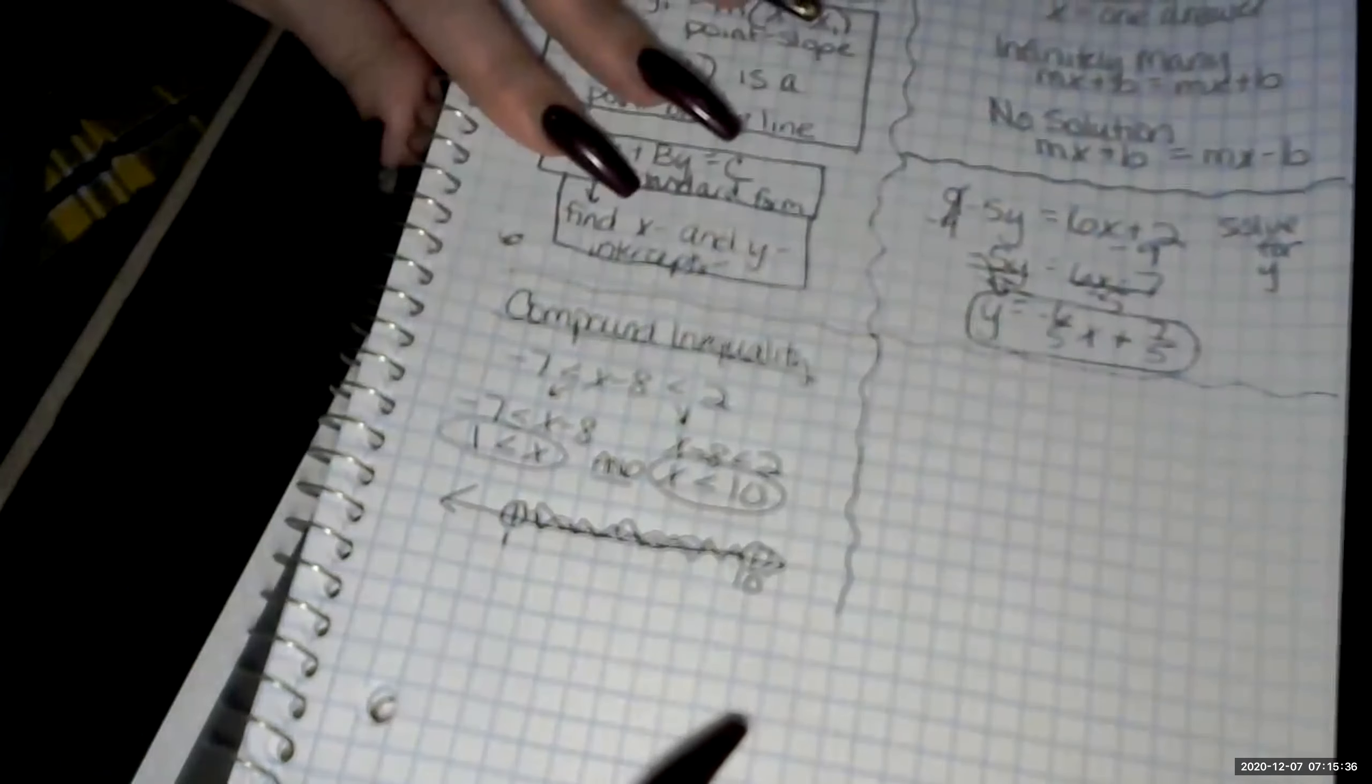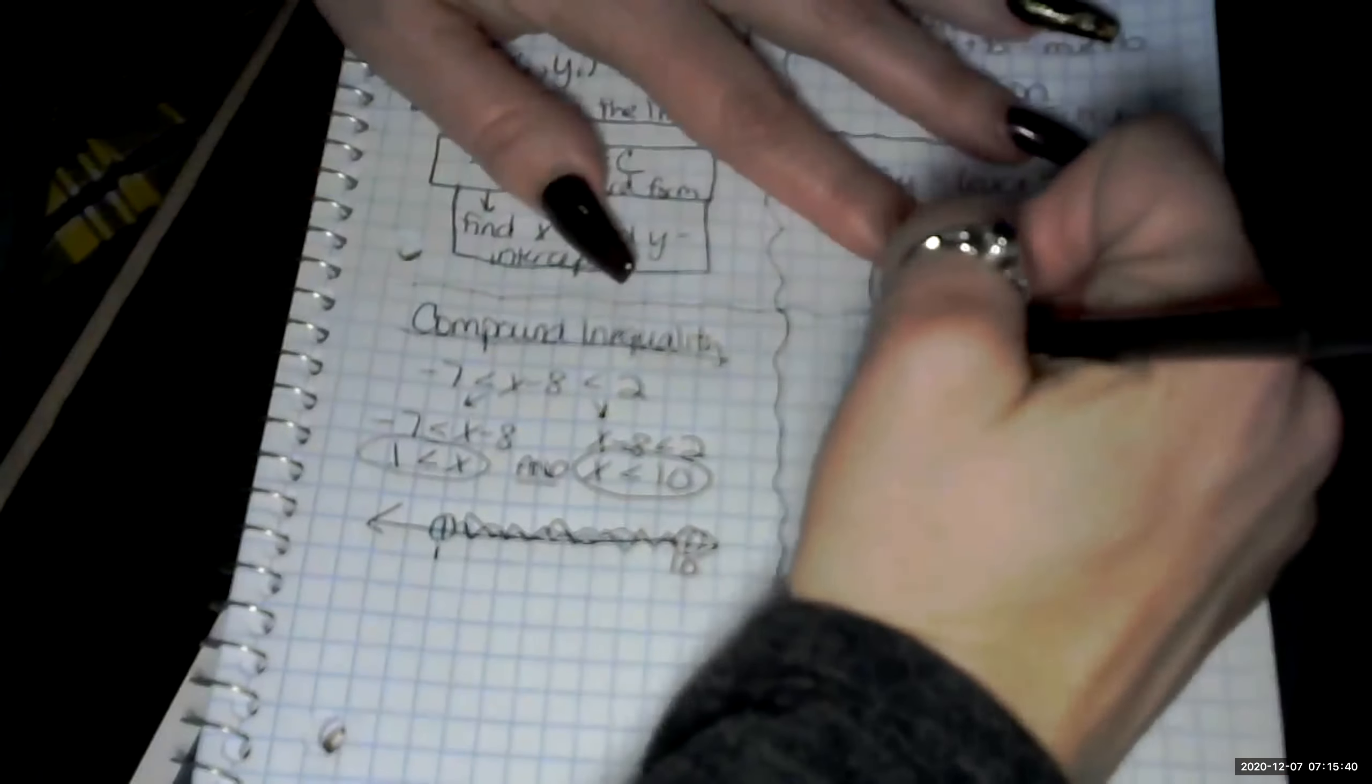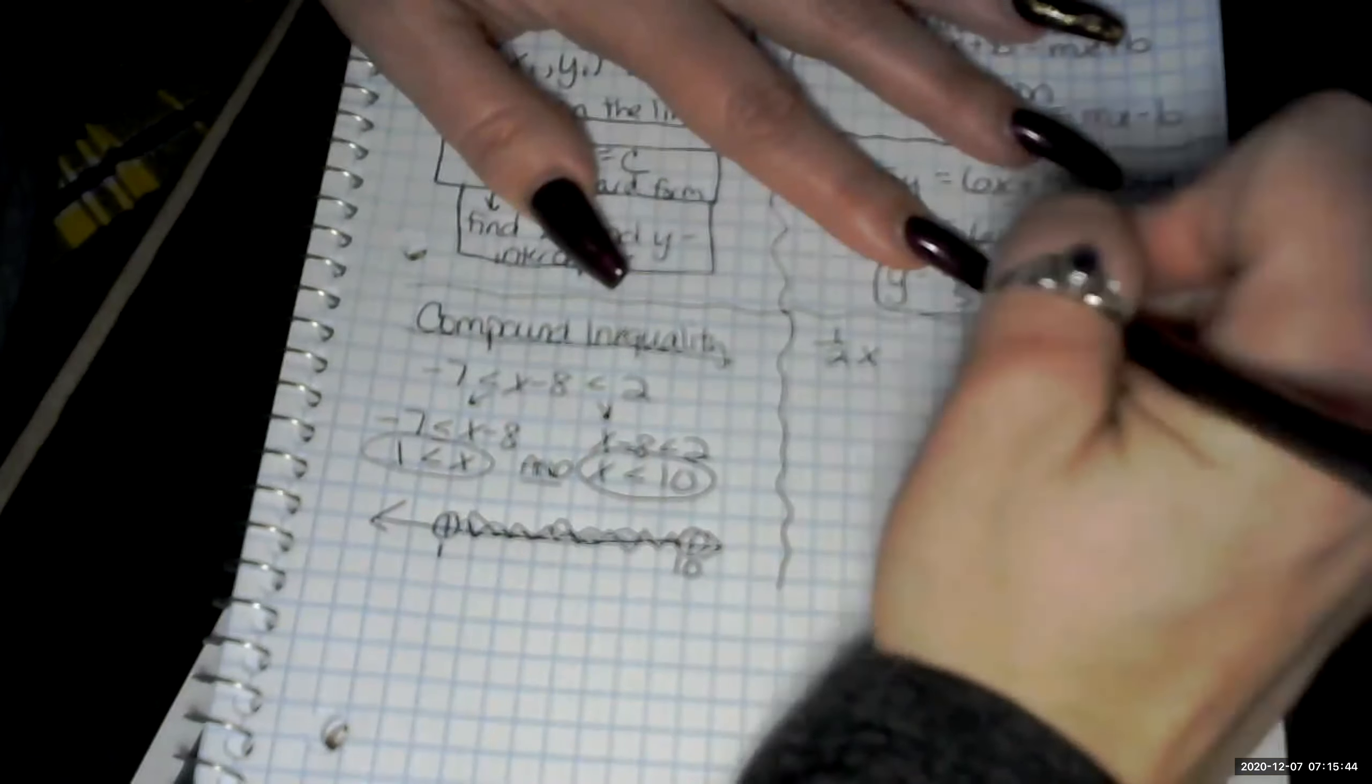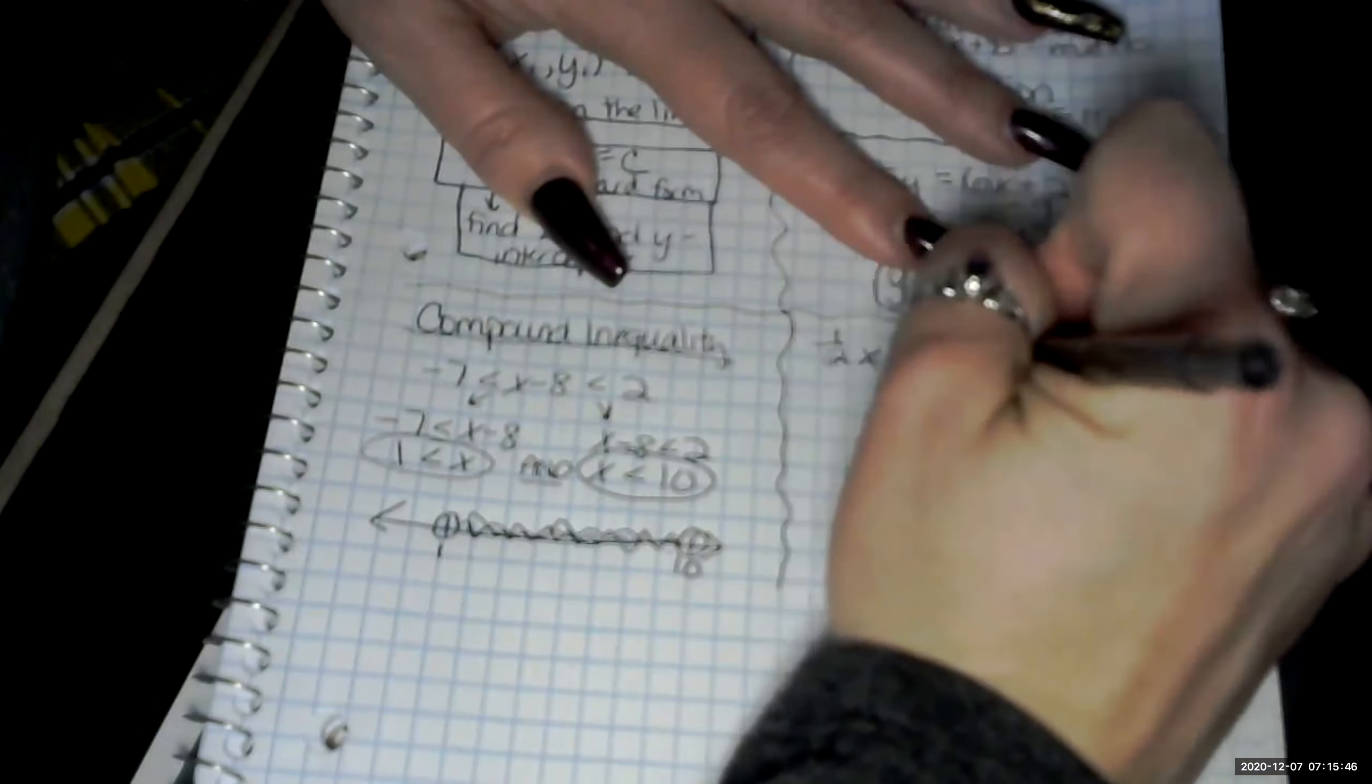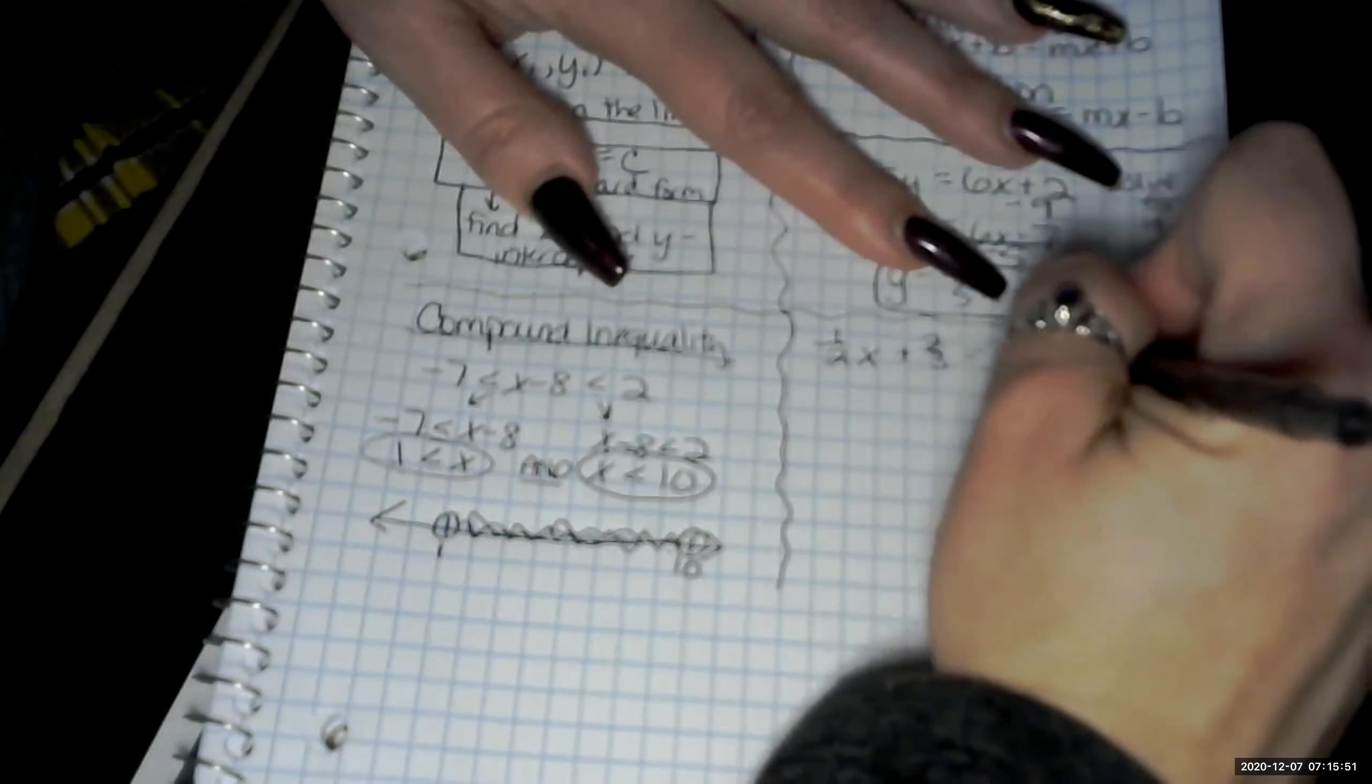Last one we're going to do is our fraction problem. So we had 1 half x plus 2 thirds equals 3 fourths x plus 1 sixth.